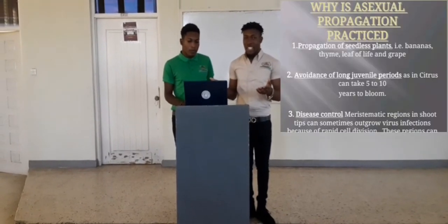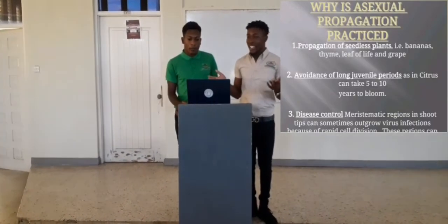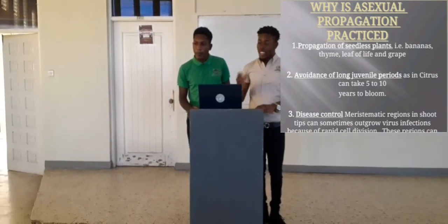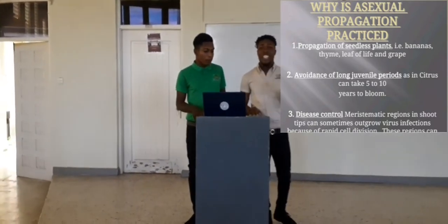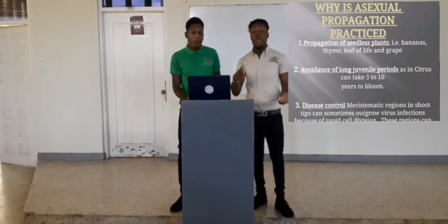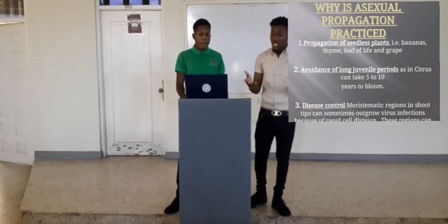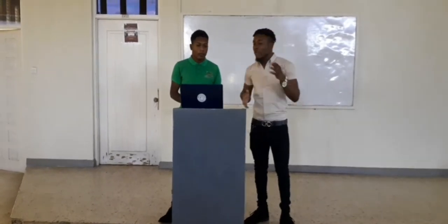So why is asexual propagation practiced? It is done to facilitate propagation of seedless plants — for example bananas, thyme, leaf of life, grapes, and other seedless plants. It is also done to help with the avoidance of long germination periods. For example, citrus trees take from 5 to 10 years to blossom, and asexual propagation can basically speed up that process.